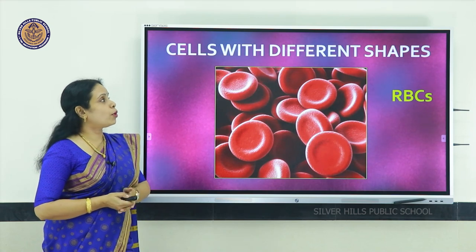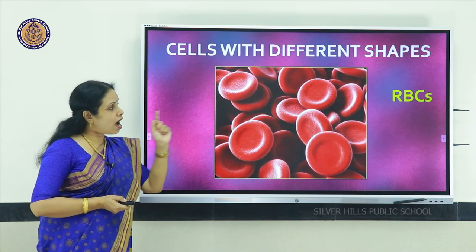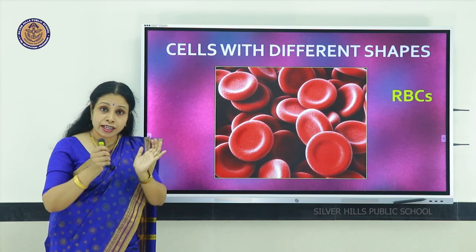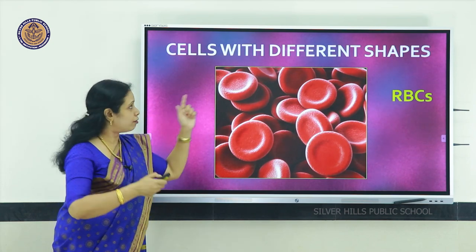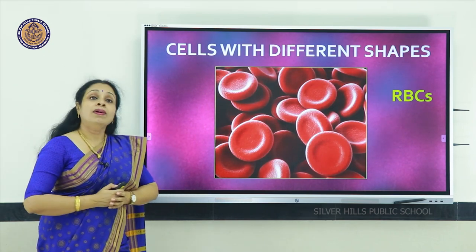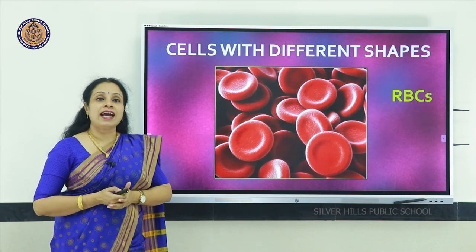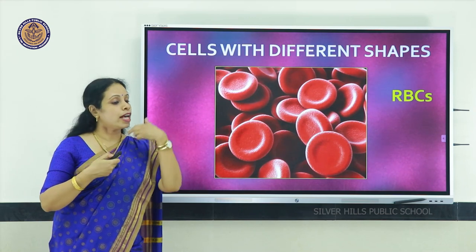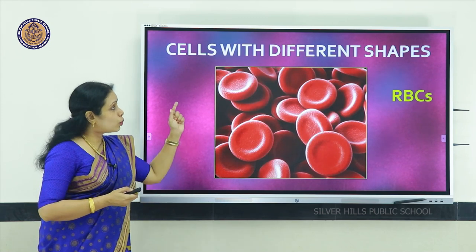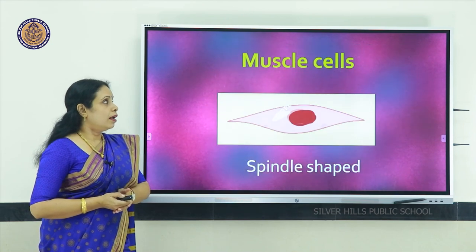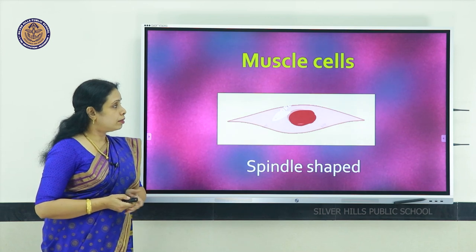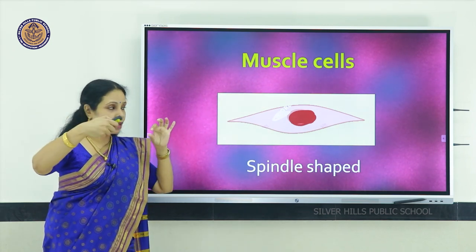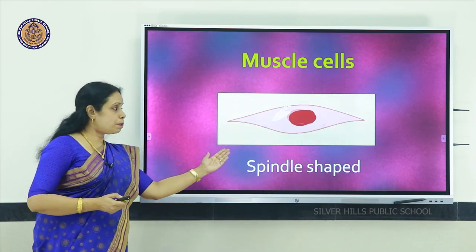Now, cells in the human body have different shapes. One good example is the RBCs — the red blood corpuscles. They appear round in shape like a disc and biconcave; both the upper and lower sides are concave. They contain a pigment called hemoglobin which is responsible for carrying oxygen towards the cells and carbon dioxide away from the cells to the lungs so that you can breathe out the carbon dioxide. Muscle cells also have a peculiar spindle shape — broad in the middle and thin and tapering towards the sides.